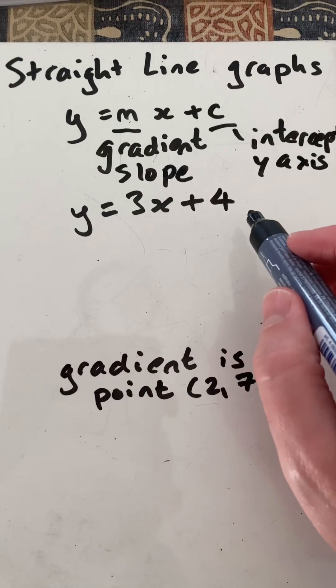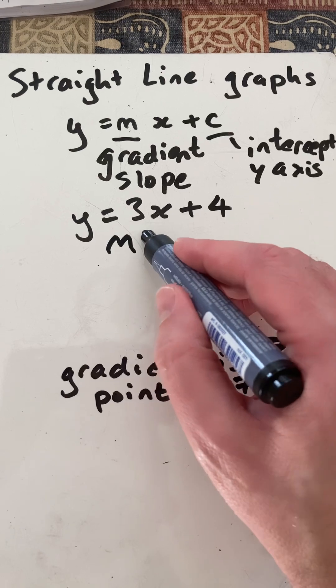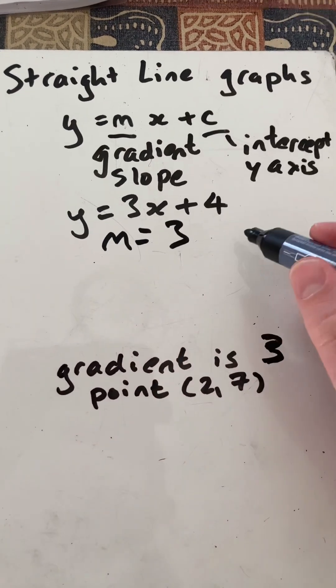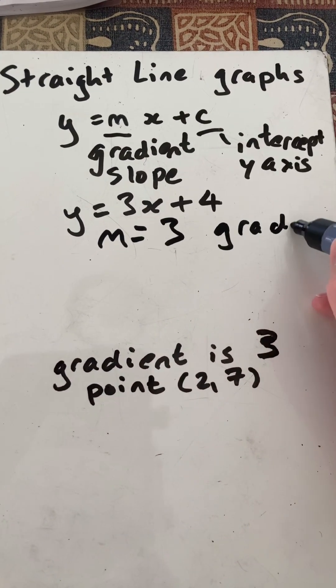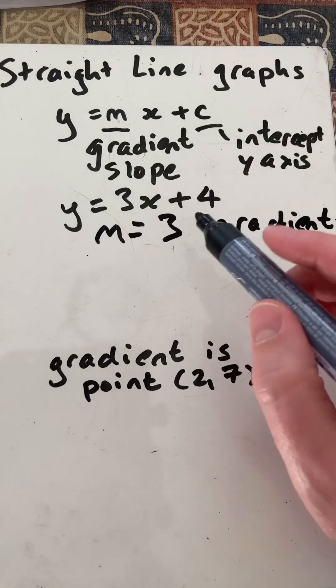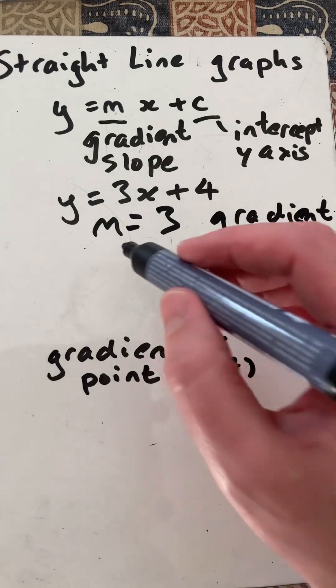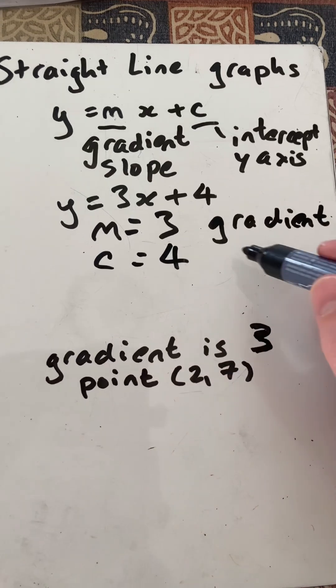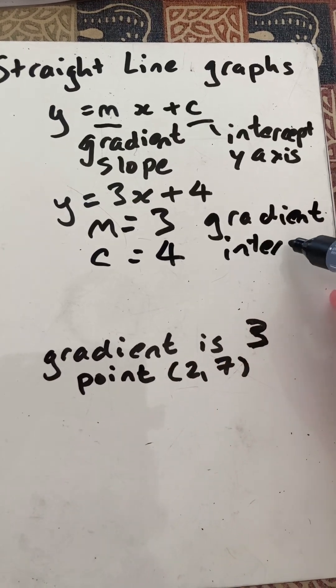y equals 3x plus 4. What is its gradient, otherwise known as m? It's 3, so it has a steepness of going up by 3 for every 1 it goes across, and it cuts the y-axis at 4. So that's the intercept.